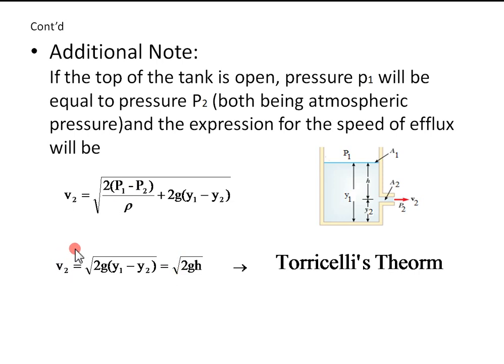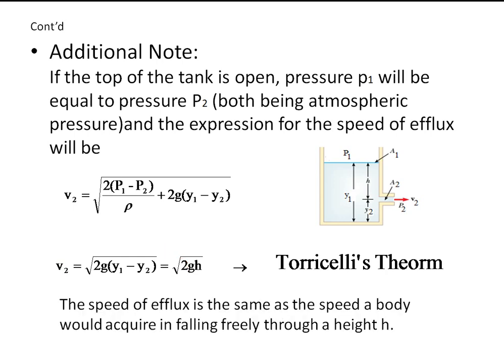Do you remember where we have used V2 equals the square root of 2GH in kinematics? It is the speed attained by a freely falling object when it falls through height H. So here, the speed of efflux is the same as the speed a body would acquire in falling through height H.